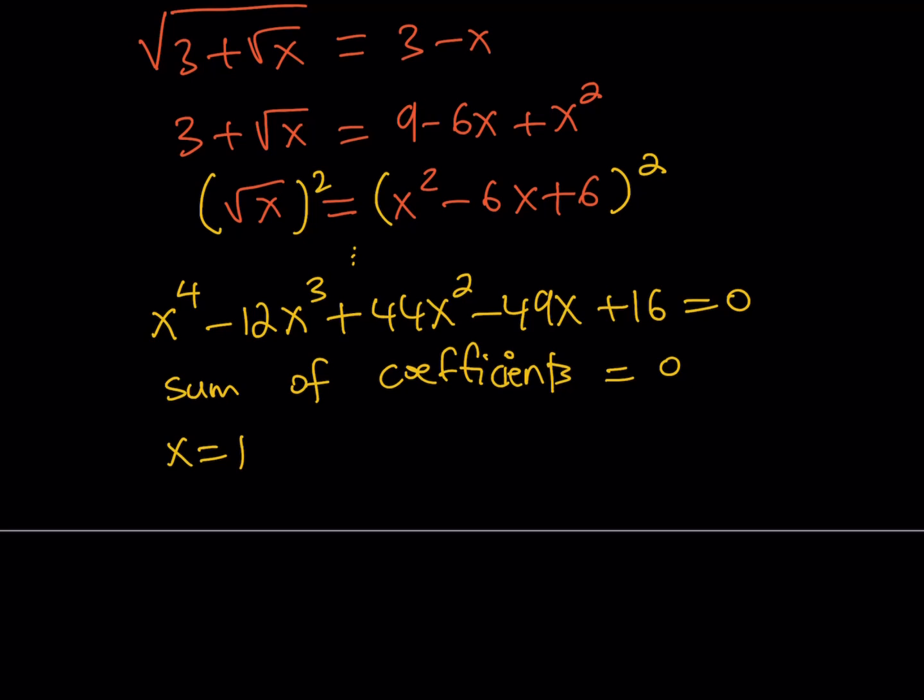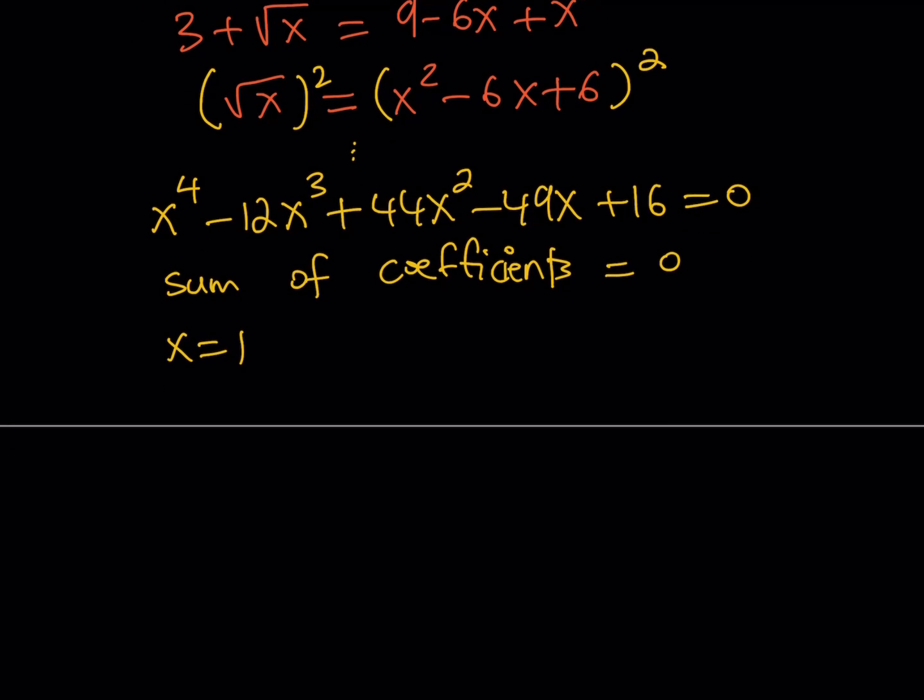What is that supposed to mean? It means x equals 1 is a solution. And that means that x minus 1 is a factor. So what we can do is we can turn this into the product of x minus 1 and a cubic, which is somewhat easier to solve.